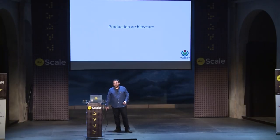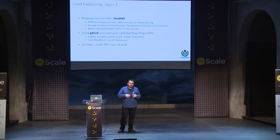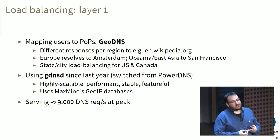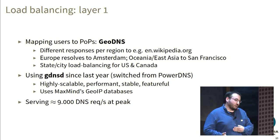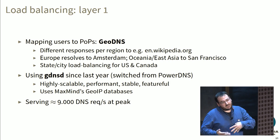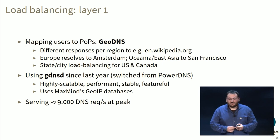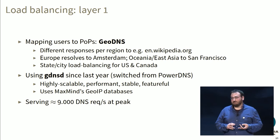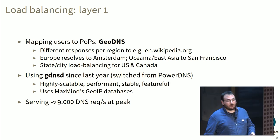Now I'll describe the production architecture. First, we load balance traffic at the basic layer of mapping users to data centers. To do that, we use a technique called GeoDNS — we serve a different DNS response to queries for Wikipedia, for example, depending on where the user is coming from. If you're coming from Paris, you end up in Amsterdam. We use a software called GDNSD, which we switched to last year. It's very stable, very high performance, and performs better than the competition, with features like deep GeoIP integration using MaxMind's databases.